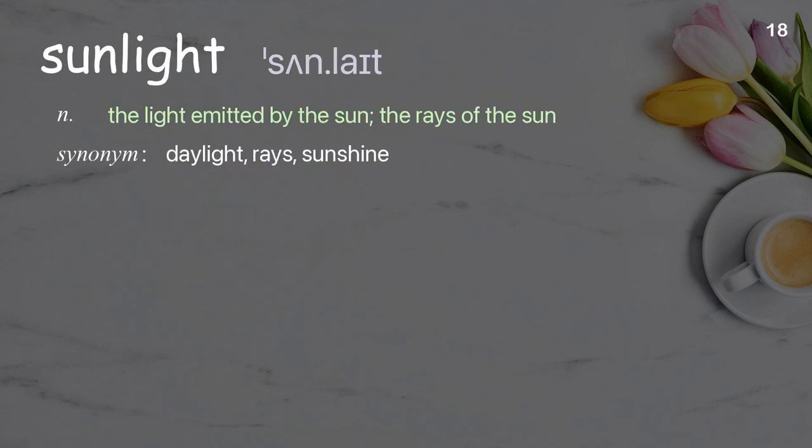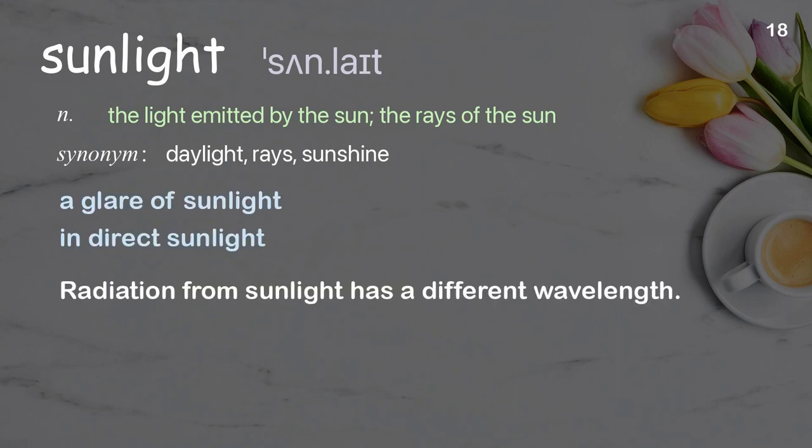Sunlight. The light emitted by the sun; the rays of the sun. Examples: a glare of sunlight, indirect sunlight. Radiation from sunlight has a different wavelength.